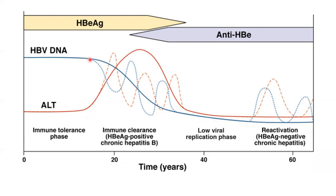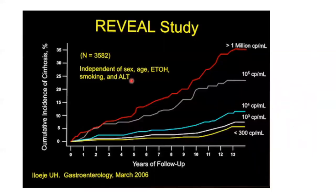In the chronic phases, DNA is very high initially, then gradually comes down to very low levels. ALT levels peak during the immune clearance phase and again during reactivation. The aim is to have low DNA levels and low ALT levels. The REVEAL study — following patients for 13 to 14 years — found increased risk of cirrhosis and HCC among patients with high DNA levels (more than 1 million), independent of age, sex, ethanol consumption, smoking, or ALT levels. This confirms that DNA is a very important marker for HBV treatment decisions.